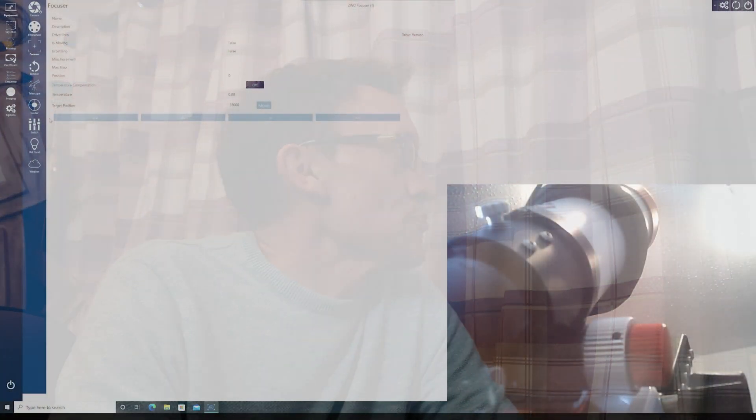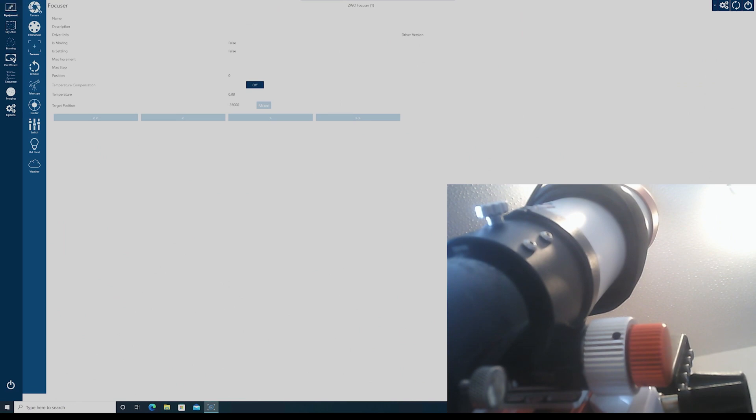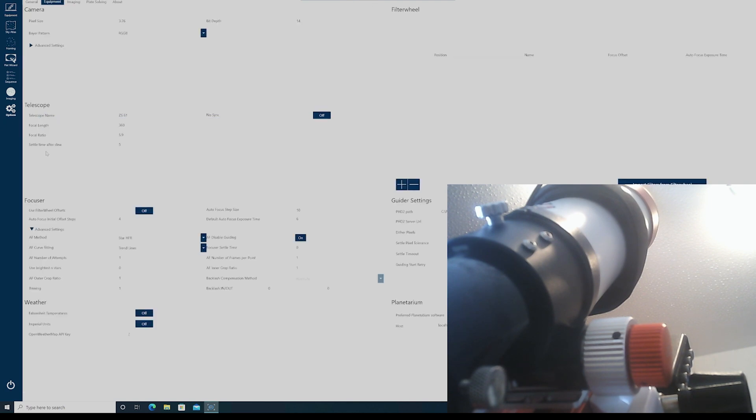So here we are. So first thing I'm going to do, I'm going to go to equipment, down to focuser, and it's going to bring the screen up. So this is already set as the focuser one. If it isn't, if it's got no focuser name, just go to the drop down menu, come down on that, or you could refresh and it might pick it up. Anyway, once I've done that, I'm going to connect the camera and just make sure it is talking. So let's have a go at this. Yeah, so it's talking. Happy days.